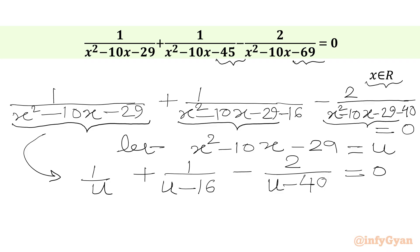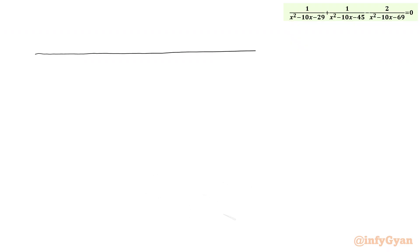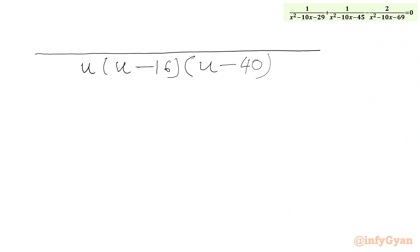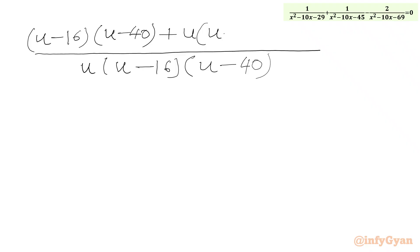Now we are going to take the LCM, so we have to multiply all three denominators. We write u times (u - 16) times (u - 40) in the denominator. For the numerator, we write (u - 16)(u - 40) plus u(u - 40) minus 2u(u - 16), all equal to 0.